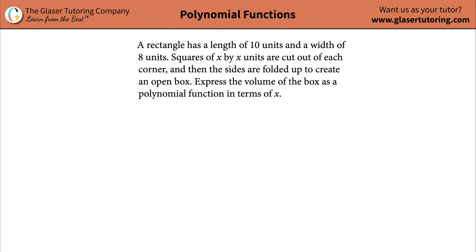Today I would like to teach you how to interpret a word problem and then from that word problem be able to write the polynomial function. So let's take a look. A rectangle has a length of 10 units and a width of 8 units. Squares of x by x units are cut out of each corner and then the sides are folded up to create an open box. Express the volume of the box as a polynomial function in terms of x.